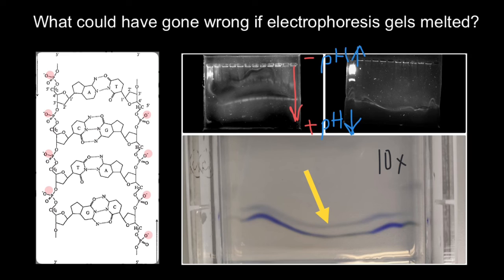So as you see, not only voltage important, but also concentration of the buffer. Both of them may lead to such gels, as you see in these pictures.